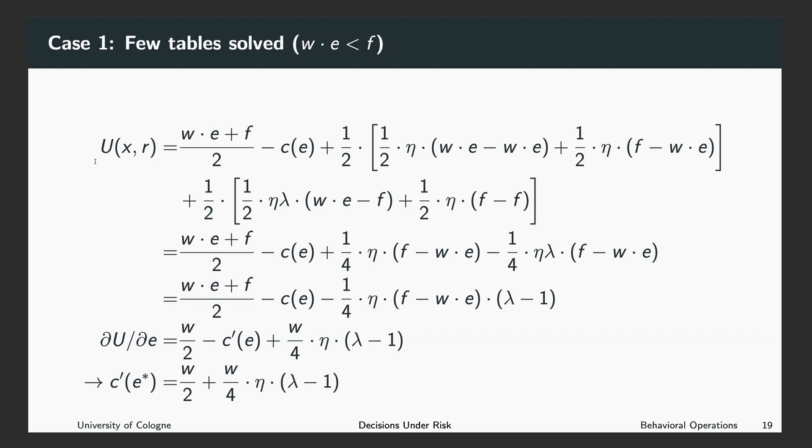So this is how we represent the situation in our utility function. Now in the next step, we are going to simplify this expression. This is zero, this is zero. So we can summarize a bit.